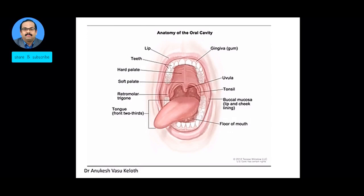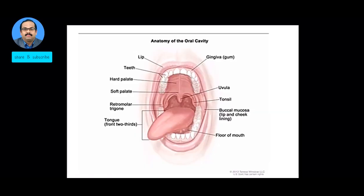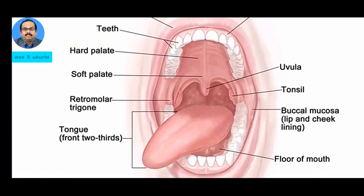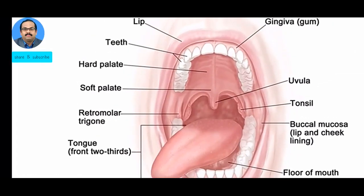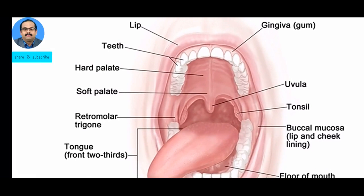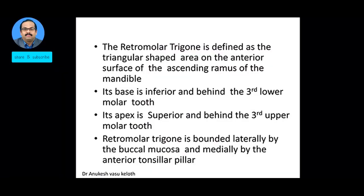Now we are going to talk about the Retro Molar Trigon. So what is the Retro Molar Trigon? It is defined as the triangular shaped area on the anterior surface of the ascending ramus of the mandible. This is the area — a triangular space on the anterior surface of the ascending ramus of the mandible. There is one area on either side.